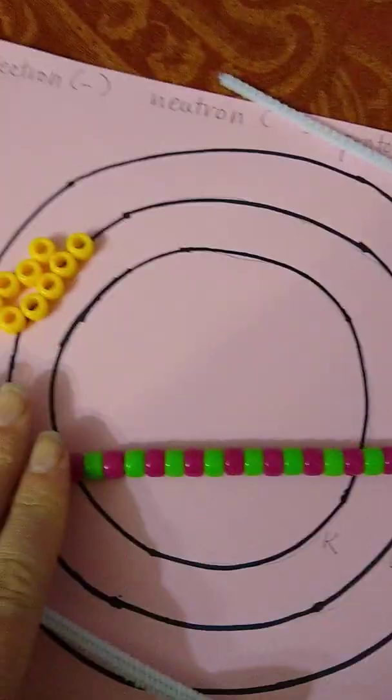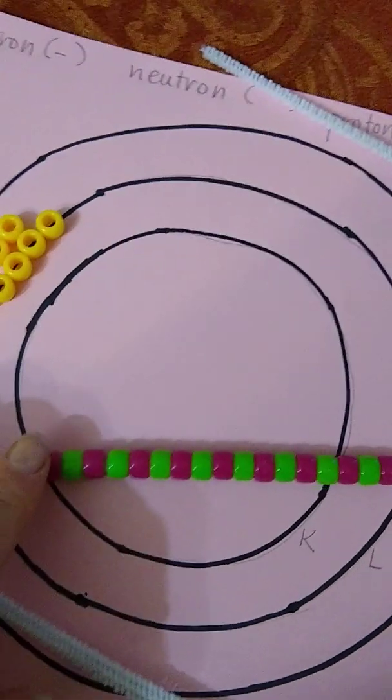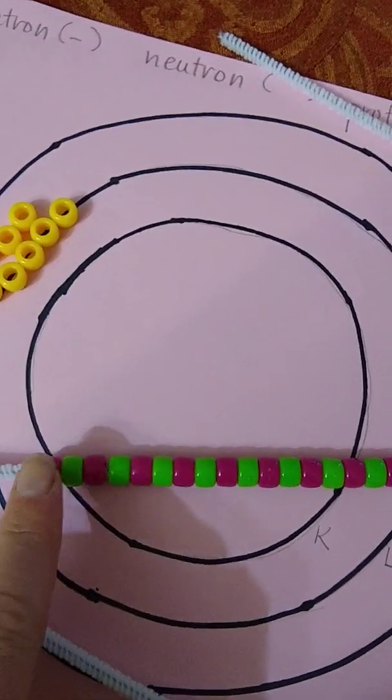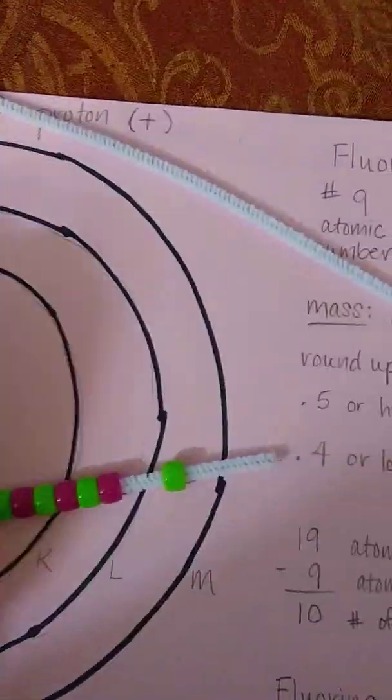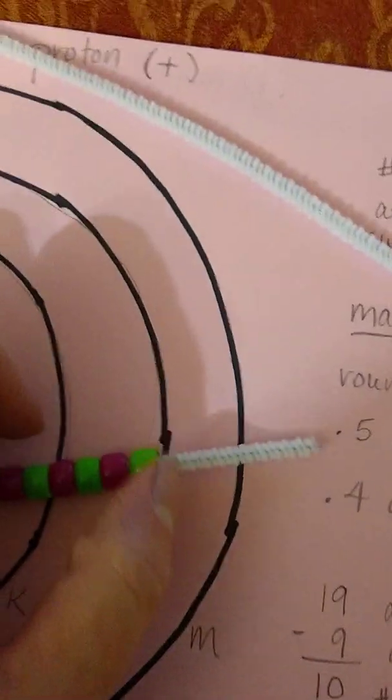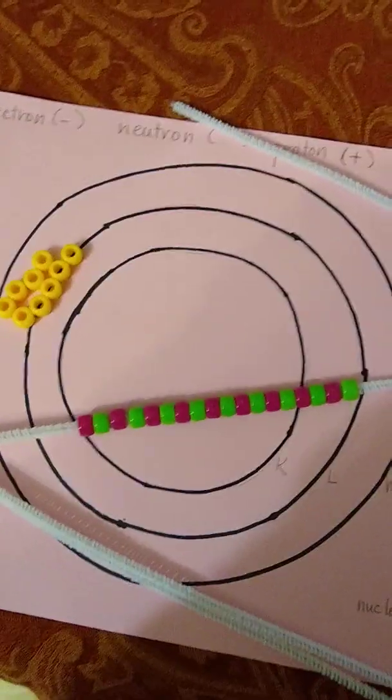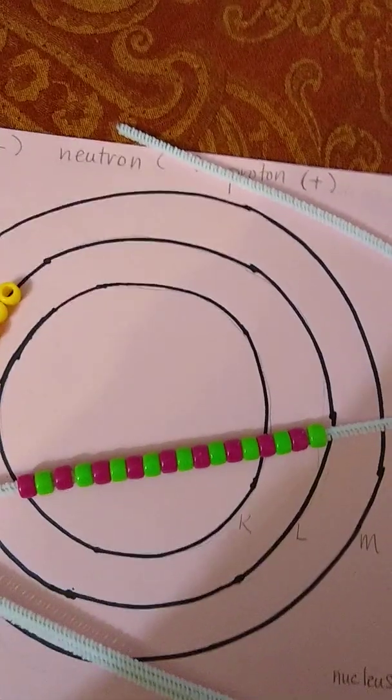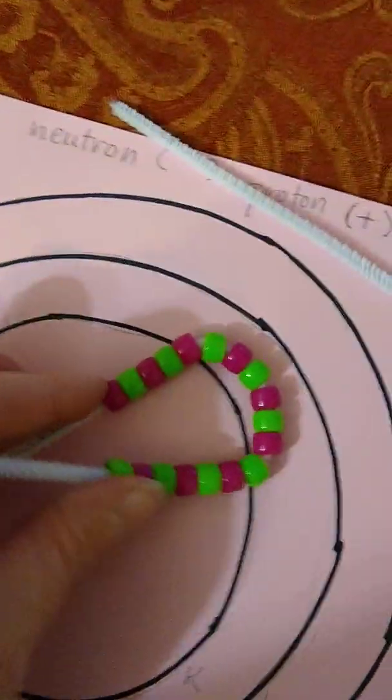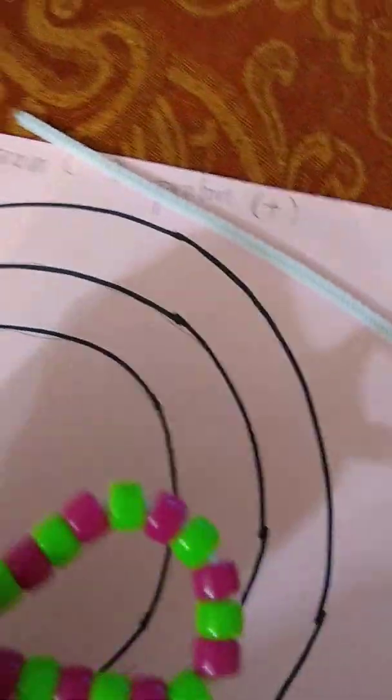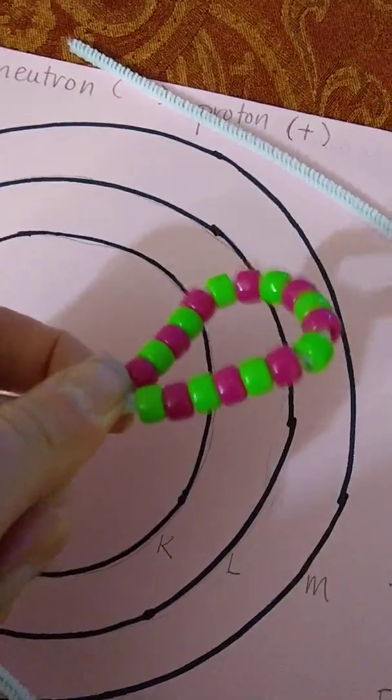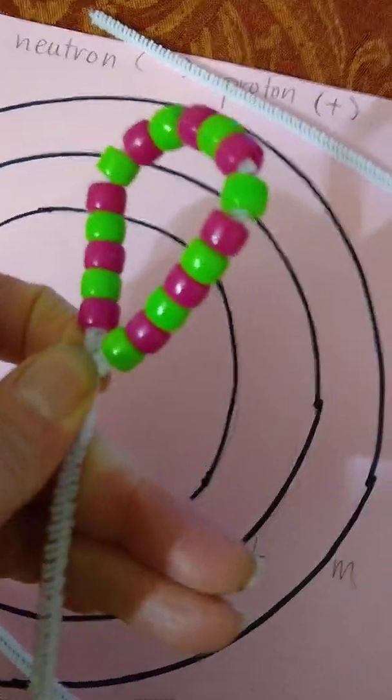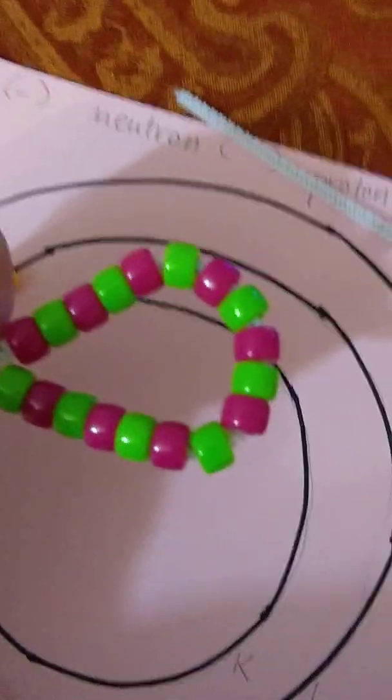So far I've put the protons and neutrons on the pipe cleaner. Now I'm going to ball this up to represent the nucleus. I'll make a loop, pinch it together, and twist it like a bread tie, then twist up this nucleus section.